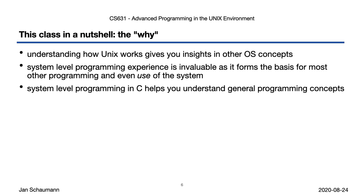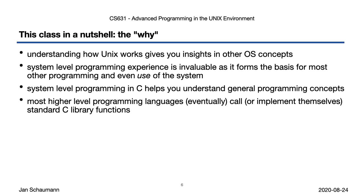C is far from obsolete — in fact, it remains ubiquitous. As we look at the different APIs and interfaces of the standard libraries, we will find that many, if not most, of the higher-level programming languages eventually fall back onto exactly these standard libraries. From a systems perspective, C remains the de facto standard, and understanding how to write C in the UNIX environment will make you a better programmer all around — a better Python programmer, a better Go programmer, a better Perl, Rust, or even JavaScript programmer.